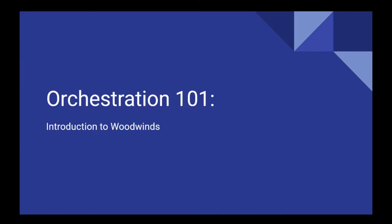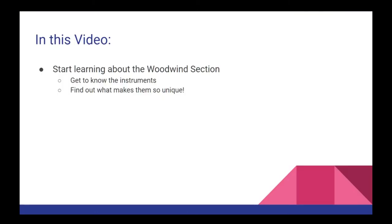Welcome to the ninth video in this series on orchestration. In the last video, we discussed some specific strategies for writing for the brass section, including breaking it down into subsections and using different instruments as tools for growth. In this video, we are going to once again shift gears and start talking about the woodwind section. We'll get to know each of the instruments a little bit better, and figure out just what makes this section so unique compared to the strings and brass. So with that, let's get started.